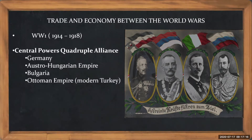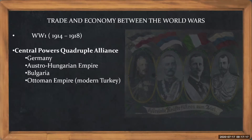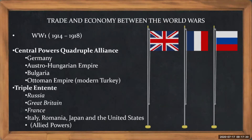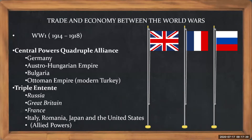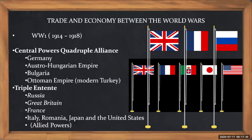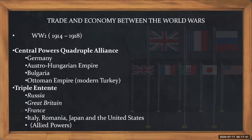On the other side you have the Triple Entente. Triple means a group of three. In the beginning there were three powers mainly: Russia, Great Britain and France. But later on Italy, Romania, Japan and USA also joined. So combined they were known as the allied powers.